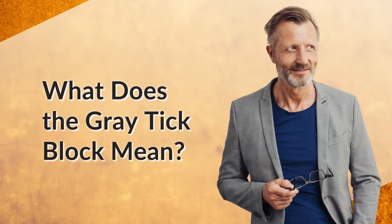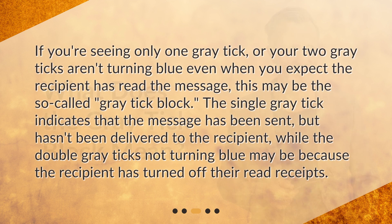What does the gray tick block mean? If you're seeing only one gray tick, or your two gray ticks aren't turning blue even when you expect the recipient has read the message, this may be the so-called gray tick block. The single gray tick indicates that the message has been sent but hasn't been delivered to the recipient, while the double gray ticks not turning blue may be because the recipient has turned off their read receipts.